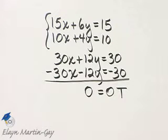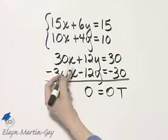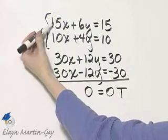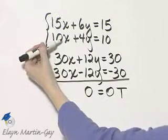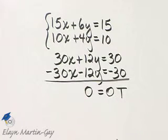Now it doesn't mean that every single ordered pair that you could possibly come up with is a solution, but it is true that any ordered pair solution of this equation is an ordered pair solution of this equation. These are dependent equations.